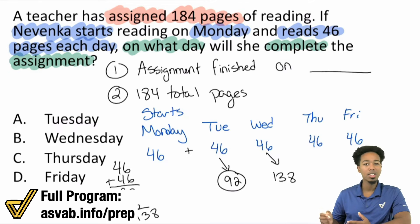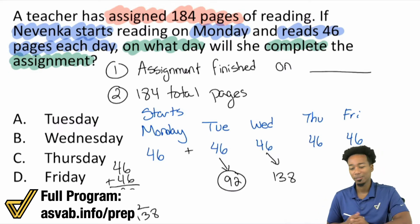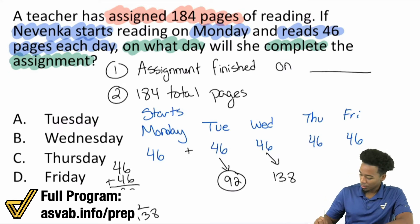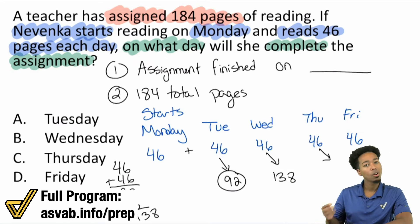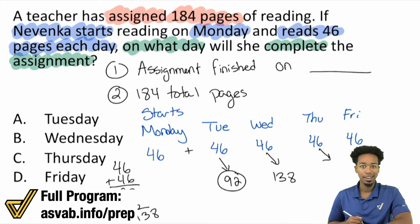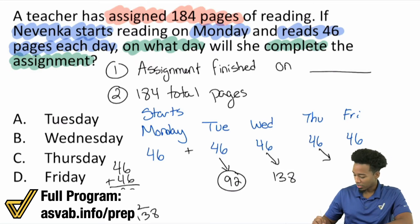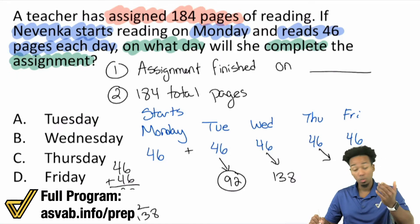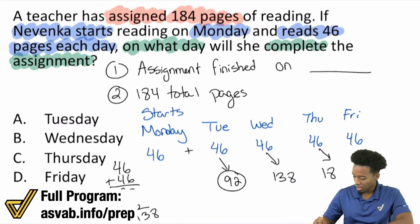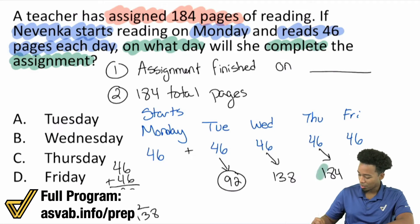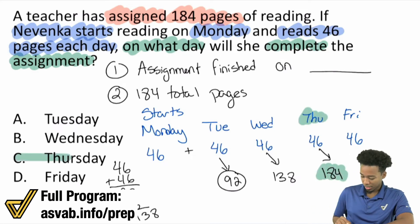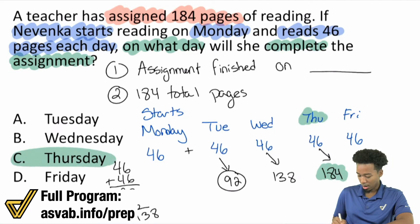Then add another 46: 138 plus 46 — that's 40 plus 138 equals 178, then add the 6, that's 184. That's exactly what we need, and that's going to be on Thursday.